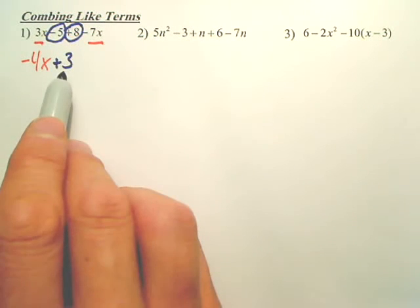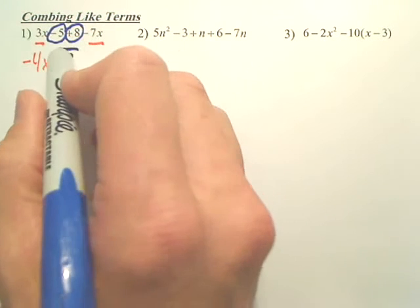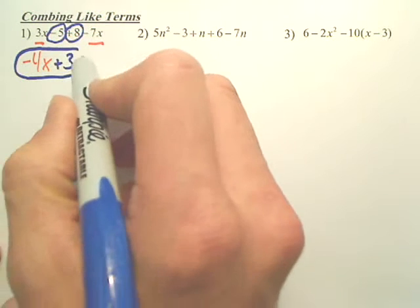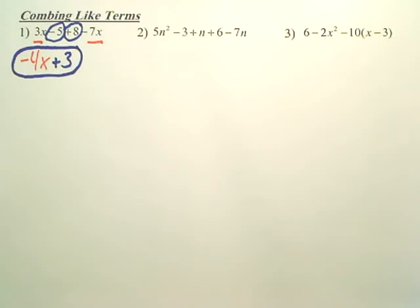Now, can negative 4X and 3 combine? Are they a like term? No, they're different types of terms. You cannot combine those. So we are done. We are just combining like terms.